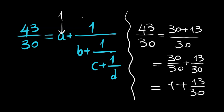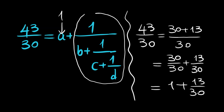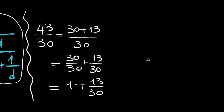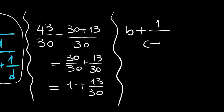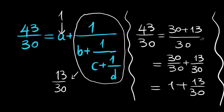This remaining part is equal to 13 divided by 30. Since 1 over something equals 13 divided by 30, that something should be 30 divided by 13. So the expression b plus 1 over c plus 1 over d should be equal to 30 divided by 13.